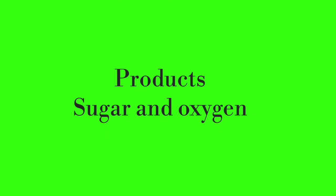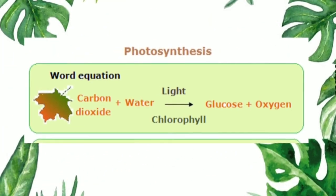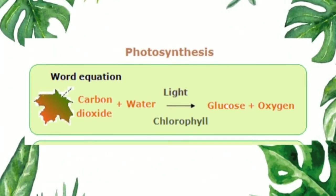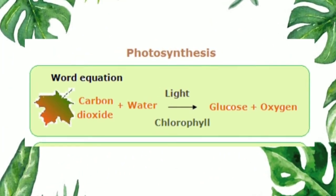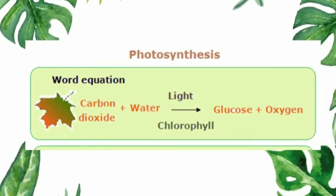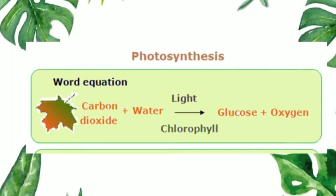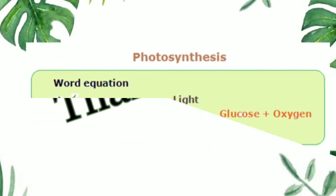During photosynthesis, plants produce sugar and oxygen. We can learn photosynthesis by a simple equation: carbon dioxide plus water gives glucose plus oxygen. Thank you, children.